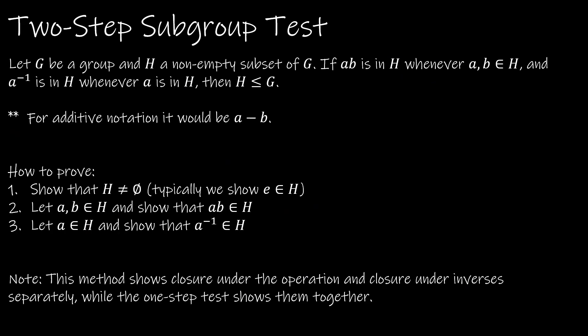The two-step subgroup test is very similar. It starts the same way — we still have to show that H is a non-empty subset of G. But then we split the second part of the proof into two parts: we show closure under multiplication (if a and b are in H, then ab is in H), and closure under inverses (if a is in H, then a⁻¹ is in H). Sometimes it is easier to show these as two separate steps. We're going to do the exact same proof now using the two-step subgroup test.